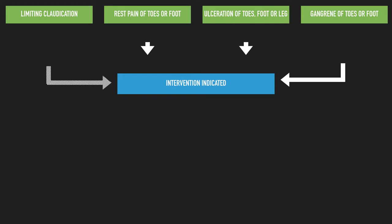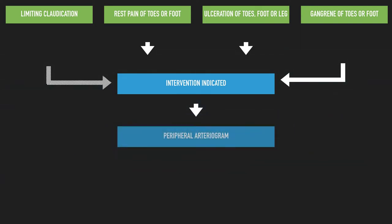If we have an indication for intervention, my approach would always be endovascular first, and that would involve doing a peripheral arteriogram. My approach is usually through the contralateral femoral artery to assess the flow through the aorta into the iliac vessels, onto the common femoral artery and then into the superficial femoral artery, to exclude more proximal disease.